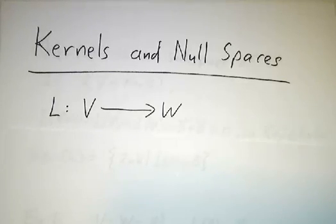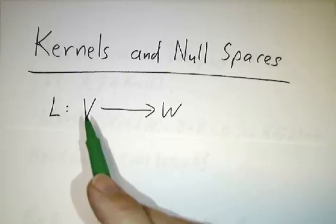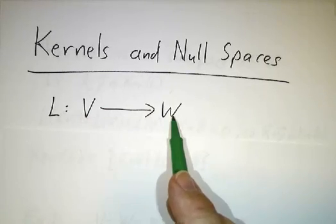So let's suppose that we have a linear transformation going from a vector space V to a vector space W.